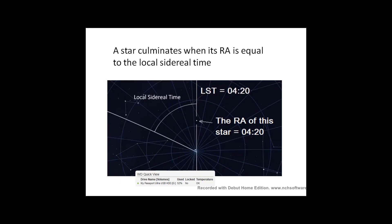Now, this is important. I can imagine this coming up on an exam question. A star culminates when its right ascension is equal to the local sidereal time. Looking at this diagram here, the local sidereal time is 4 hours and 20 minutes. And if a star has a right ascension of 4 hours and 20 minutes, then it will culminate, it will transit your upper meridian at a sidereal time of 4 hours and 20 minutes.